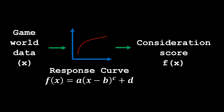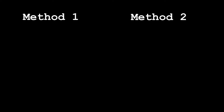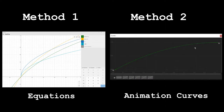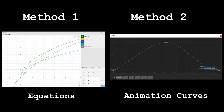There are two ways to implement response curves. One way is to write out an equation that takes an input and calculates a consideration score, but this approach is harder because you have to fiddle with equations and numbers. The easier way is to use Unity's animation curves to actually draw out the response curve you want — it's very easy to set up and modify by hand. That's the approach we'll take for our prototype AI.